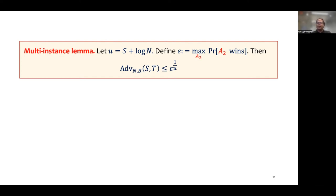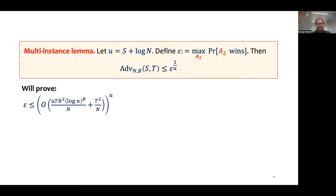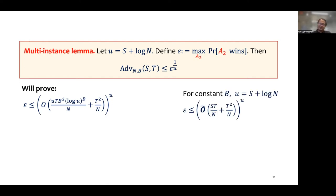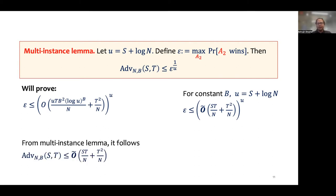We will prove that ε is in turn bounded by a quantity which, for constant values of b and u = s + log n, is asymptotically in the order of (st/n + t²/n)^u, ignoring polylog factors. Applying the multi-instance lemma gives us the upper bound on the maximum advantage of an st-adversary in finding b-block collisions.